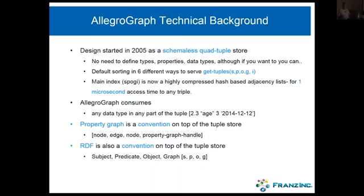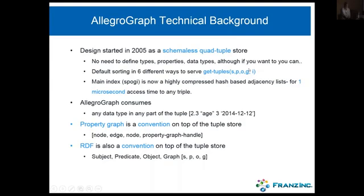AllegroGraph is built from the ground up. There are several triple stores built on top of relational databases — Oracle does that, and there's an open source version called Virtuoso — but we built it from the ground up, mostly Amon sitting here. It's what we call a schema-less quadruple store, where each part of a quad can be anything you want — a number, a string, a date. Think of a relational database with four columns — that's all it is — except we sort these columns in six different ways, so that you can give any combination of subject, predicate, object, or the fourth element — the graph — and we always find the right index for you, with one disk access, to go to the spot where your data will be.